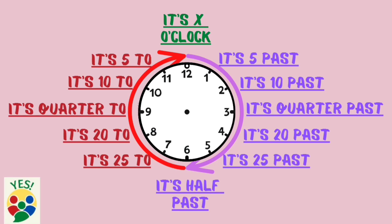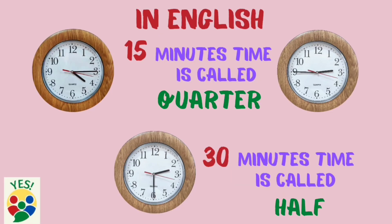The other way to say the time in English is to use the words 'past' and 'to'. In English, 15 minutes is called a quarter. 30 minutes is called half.